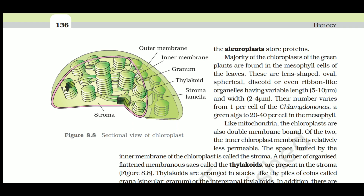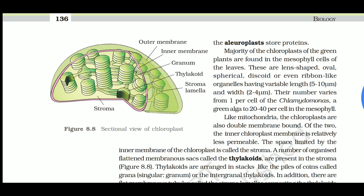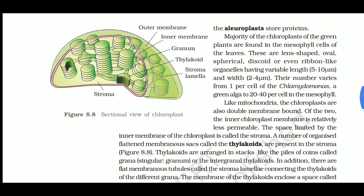In the chloroplast, we have the outer membrane, inner membrane, and the granum. The whole stack of coin-like structures is called a granum; one coin is called a thylakoid. The connections between one granum and another are called stroma lamella. The remaining space is called the stroma - analogous to the matrix in mitochondria.